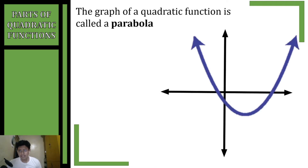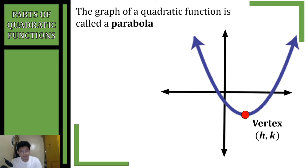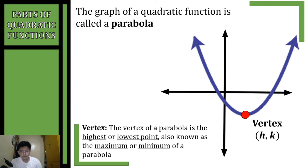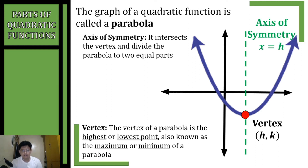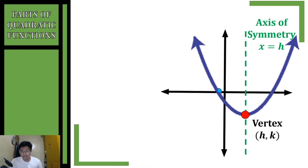The graph of a quadratic function is called a parabola. We have a parabola opening upwards and a parabola opening downwards. The vertex of a parabola is the highest or the lowest point, also known as the maximum or minimum. The vertical line that cuts our parabola is called the axis of symmetry — it intersects the vertex and divides the parabola into two equal parts.